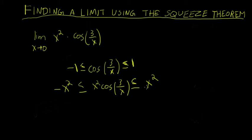So now you can see we have the function of interest bounded below by negative x squared and above by positive x squared.